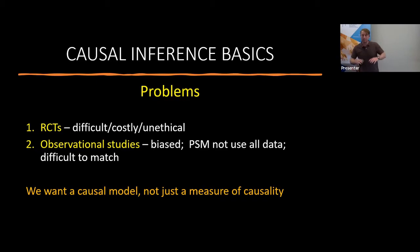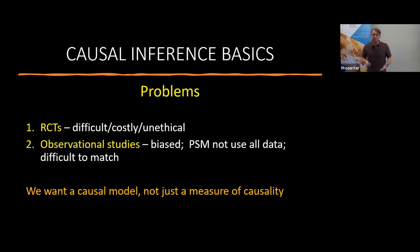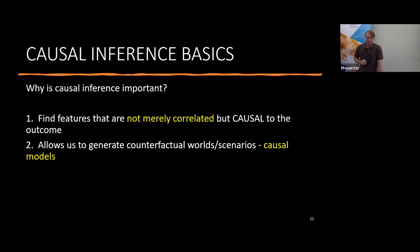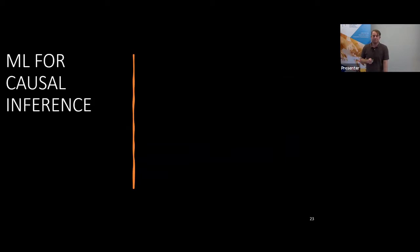Problems of causal inference: randomized control trials are costly and can be unethical, even though they're the gold standard. Observational studies have bias; matching and PSM don't use all the data and it's difficult to match, though these are still good methods. What we ultimately want is a causal model — not just a measure of causality, but a model. Why is causal inference important? First, we want features that are not only correlated but causal to the outcome. Second, it allows us to generate counterfactual worlds and causal models.